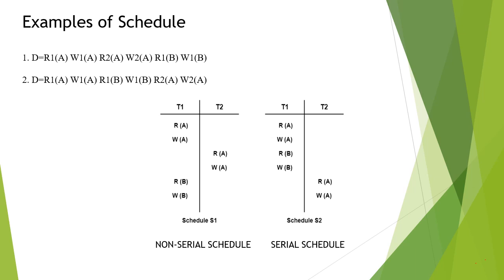Let's see an example of a Schedule. I have given 10 schedules here, each with 6 operations: 1, 2, 3, 4, 5, 6. The first operation is R1 of A — we can call it a Read operation on data A in transaction 1. Likewise, we can call another operation as a Write operation on data A in transaction 2. This type of presentation is tough to understand, so I am converting this into table format. In this schedule, only 2 transactions are involved — transaction 1 and transaction 2 — so I have drawn 2 columns. Based on the number of transactions, you have to draw the columns accordingly, and I have plotted each operation in tabular format.